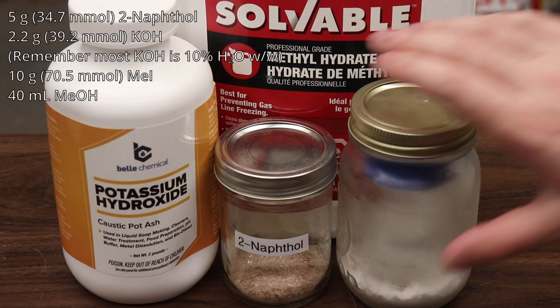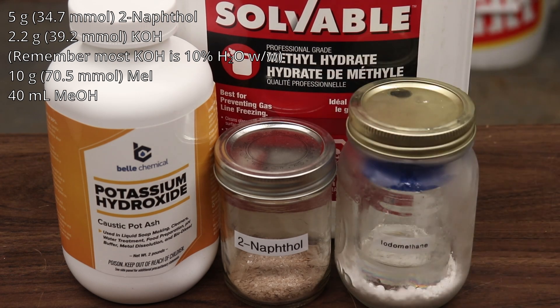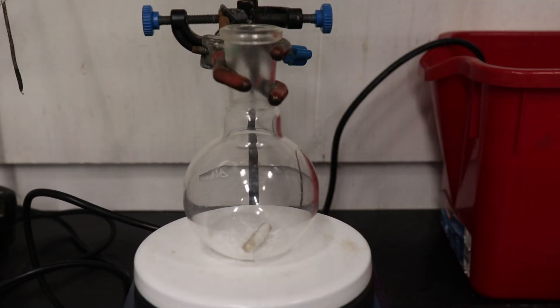While I like the dimethyl sulfate alkylation for its speed, simplicity, and high yield, dimethyl sulfate is quite an expensive reagent and is also extremely toxic. So now I'm going to show how to make 2-methoxynaphthalene with methyl iodide, which is much less toxic, albeit still fairly toxic, and it is quite a bit more accessible than dimethyl sulfate.